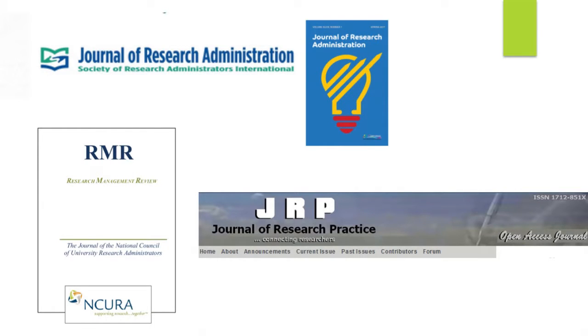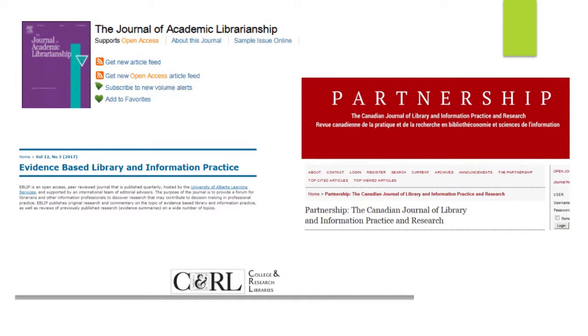The content analysis covered journal articles from these two professions. For research admin, there are three main professional journals and I included all three. For LIS, I included the two major journals on academic librarianship in North America — the Journal of Academic Librarianship and College and Research Libraries — as well as two Canadian journals: Evidence Based Library and Information Practice and Partnership, to increase the Canadian content in my analysis.